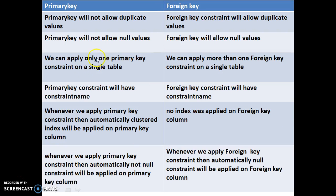To summarize the differences: primary key will not allow duplicate values; it will not allow null values; and we can apply only one primary key on a single table. Foreign key will allow duplicate values; it will allow null values; and we can apply more than one foreign key on a single table. Both primary key and foreign key will have constraint names. Whenever we apply primary key, a clustered index is automatically applied on the primary key column; no such index is applied on the foreign key column. When we apply primary key, NOT NULL is automatically applied; when we apply foreign key, NULL constraint is automatically applied — that is why foreign key allows null values.